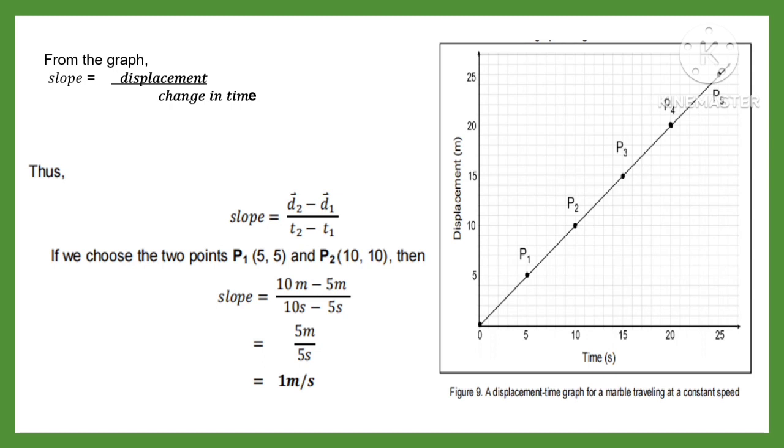If we choose the two points P1(5, 5) and P2(10, 10), then slope equals 10 meters minus 5 meters divided by 10 seconds minus 5 seconds. The answer is 5 meters divided by 5 seconds. The answer is 1 meter per second.